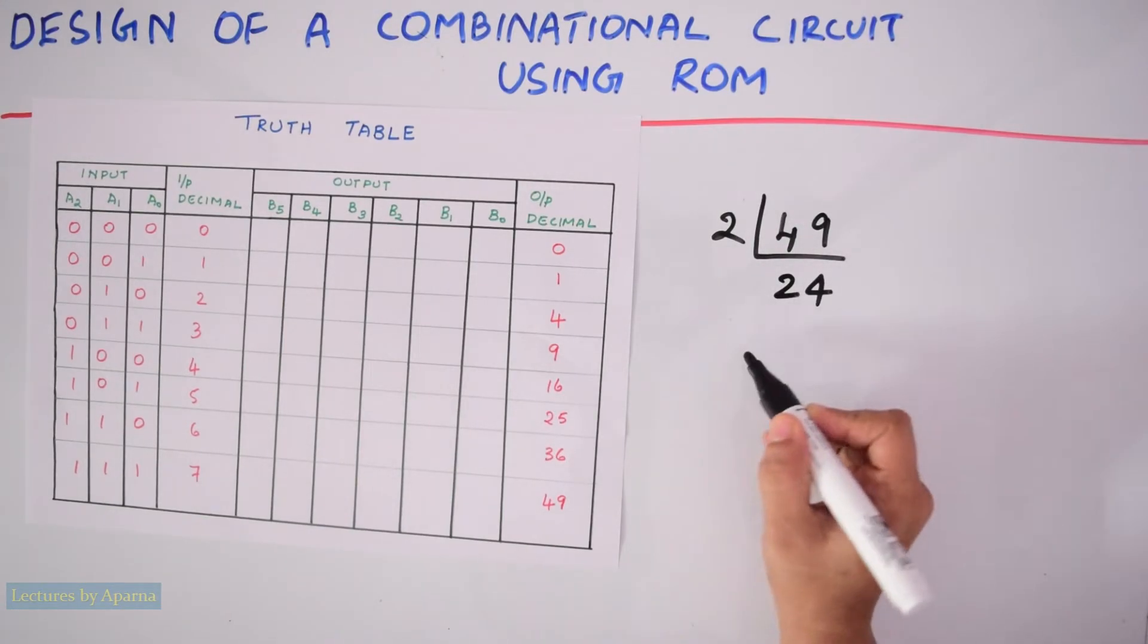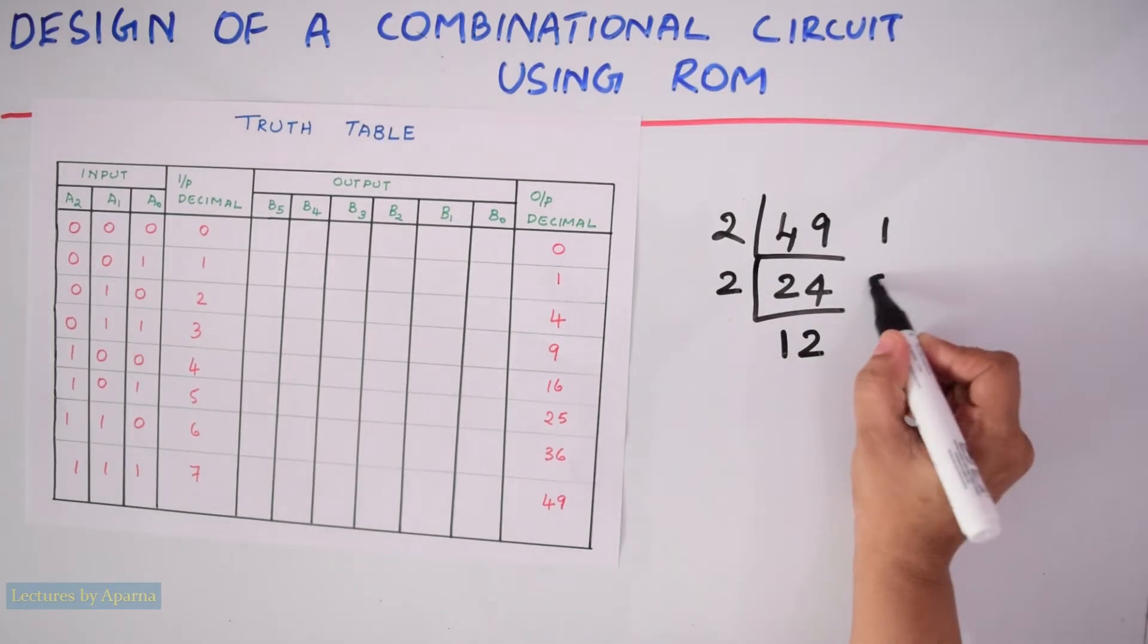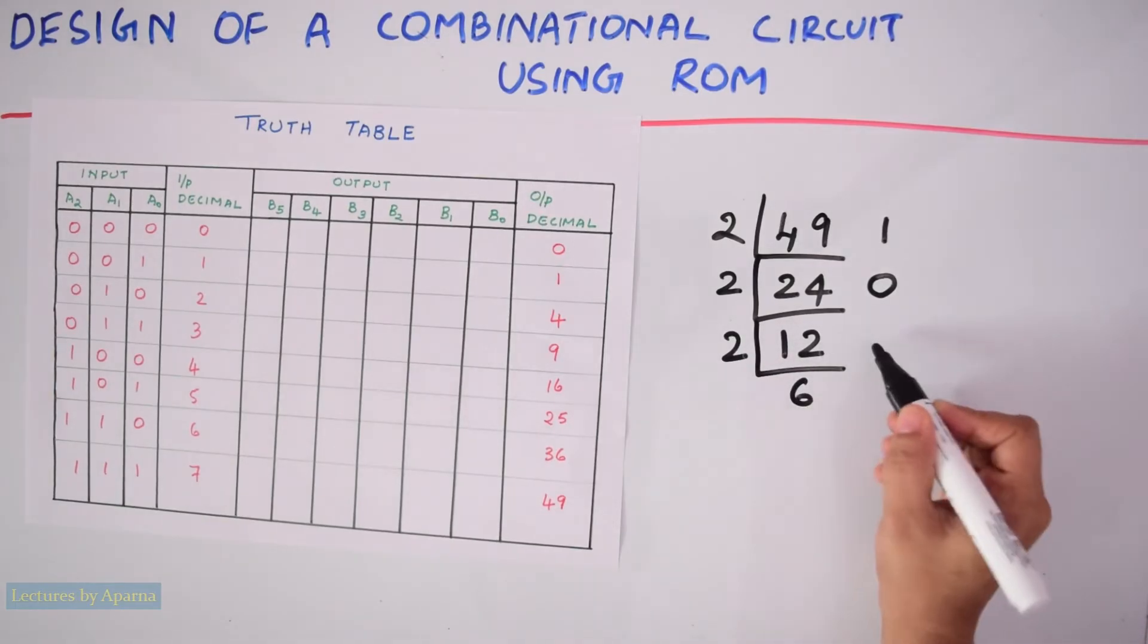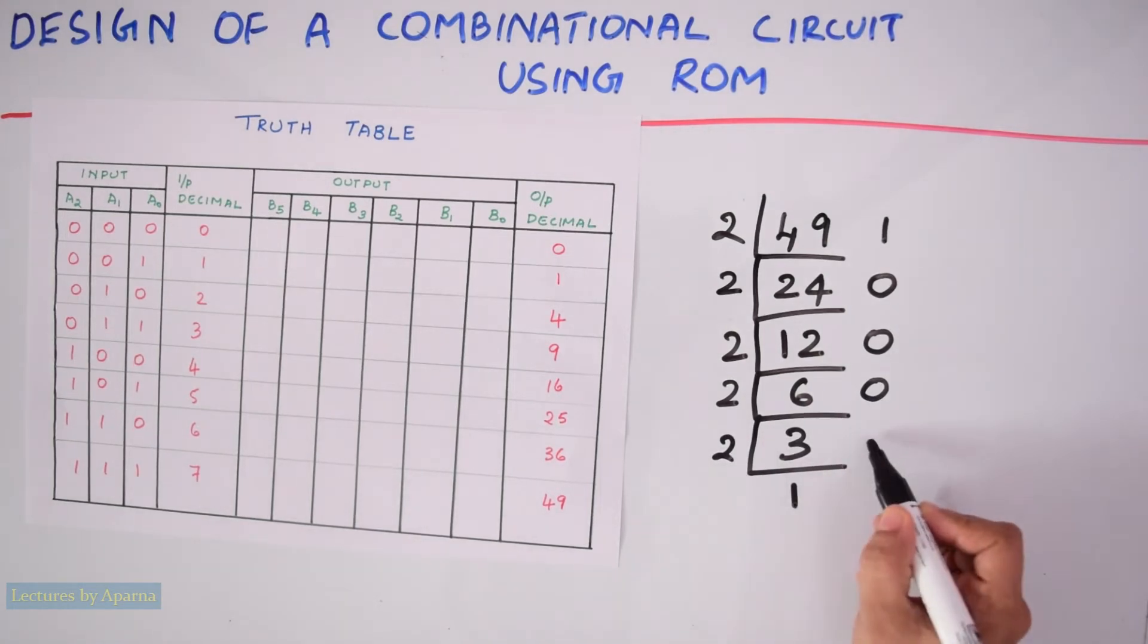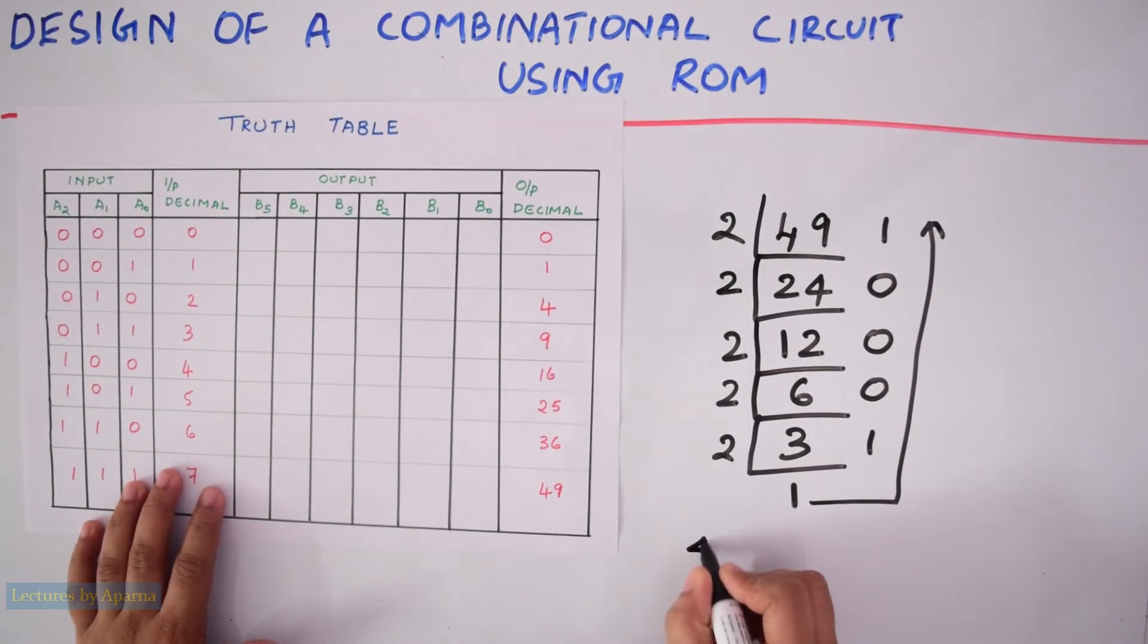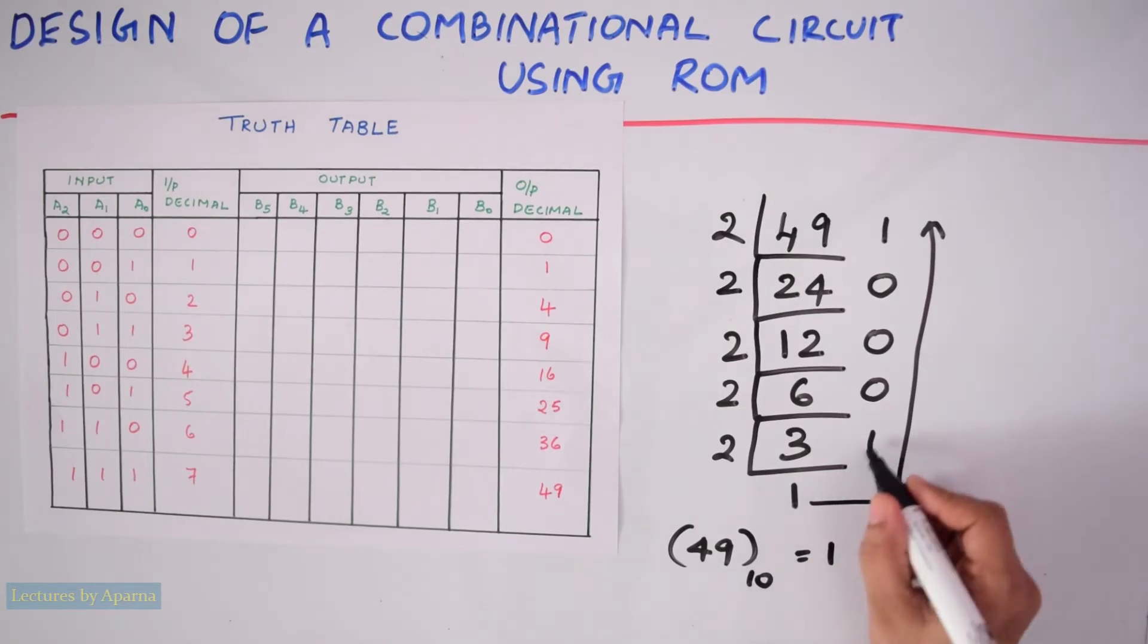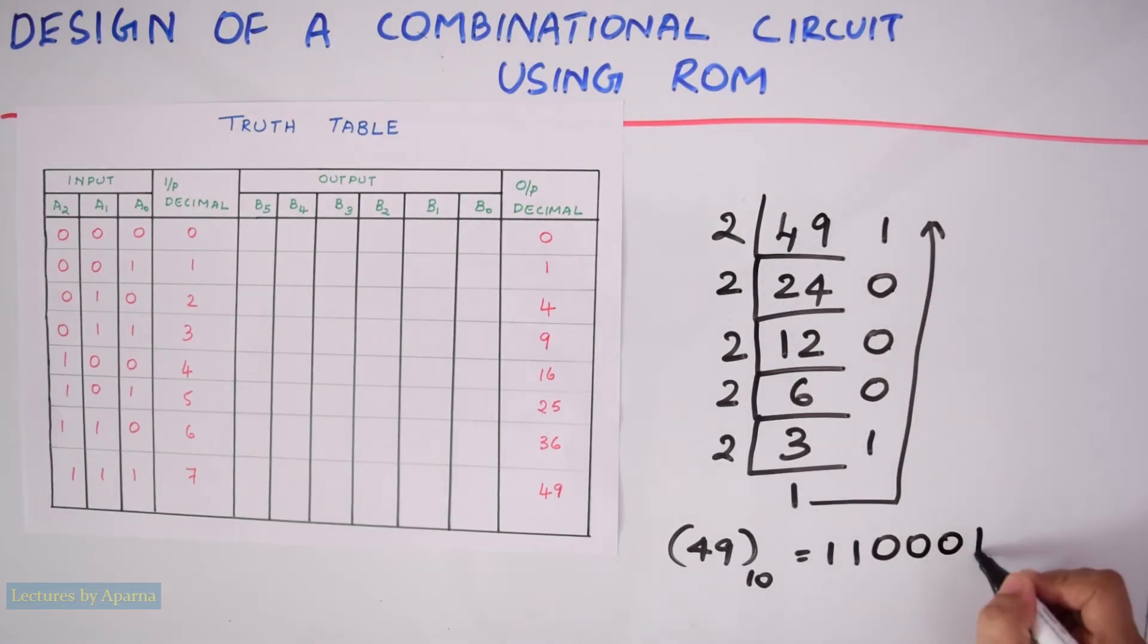So I have to divide it by 2. 2, 2s are 4, 2, 4s are 8, one remainder. Next, again divide it by 2. So 2, 1s are 2, 2, 2s are 4, 0 is the remainder. 2, 6s are 12, 0 is the remainder. Again divide it by 2. 2, 3s are 6, 0 is the remainder. Again divide it by 2. 2, 1s are 2, 1 remainder. Now you have to read this in the reverse form. So the binary equivalent of this decimal number is, if I read it backwards, it will be 110001.